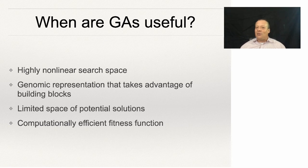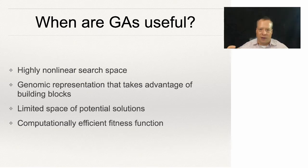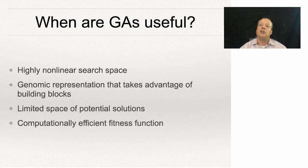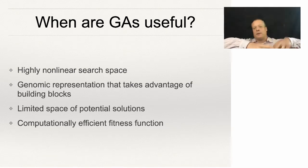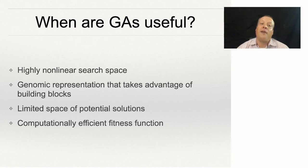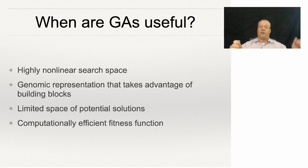But when are GAs actually useful? That's a different question. First of all, if the space is highly linear, they're not going to work very well — it's better to use something like regression. The solution search space has to be highly non-linear, with parts that have a lot of fitness and parts that don't have very good solutions. You also have to be able to create a genomic representation that can take advantage of the building blocks — if different pieces are going to be spread over the genome no matter what you do, that's not going to work very well.